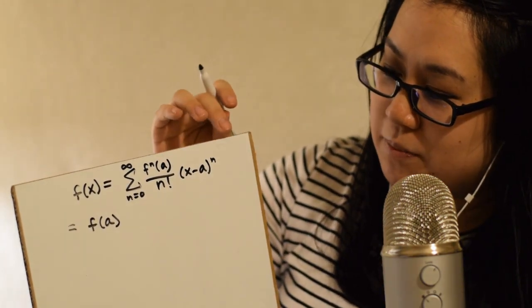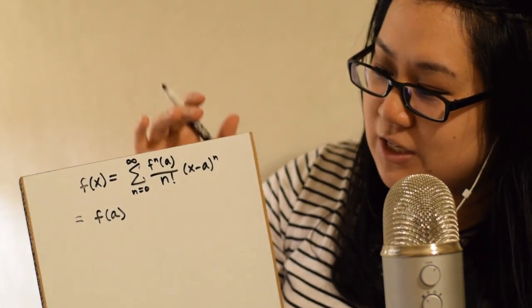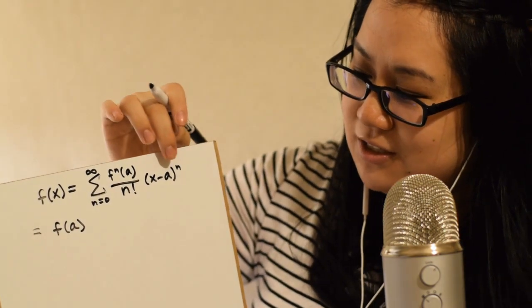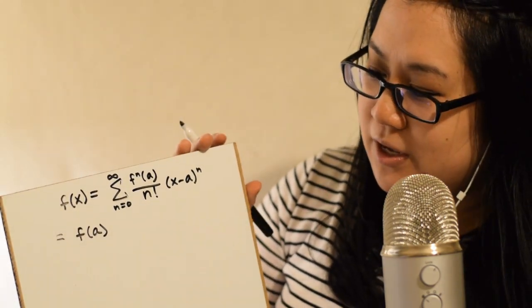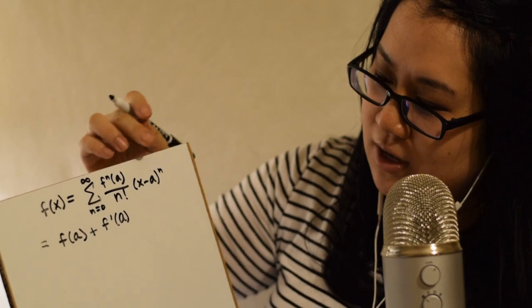Keep in mind the n's are what's changing. Then we have a plus, and for n equals one we have f prime of a — the first derivative of f of x evaluated at a — divided by one factorial, which is still one. Times x minus a to the power of one, which is just x minus a. So the n equals one term is f prime of a times x minus a.